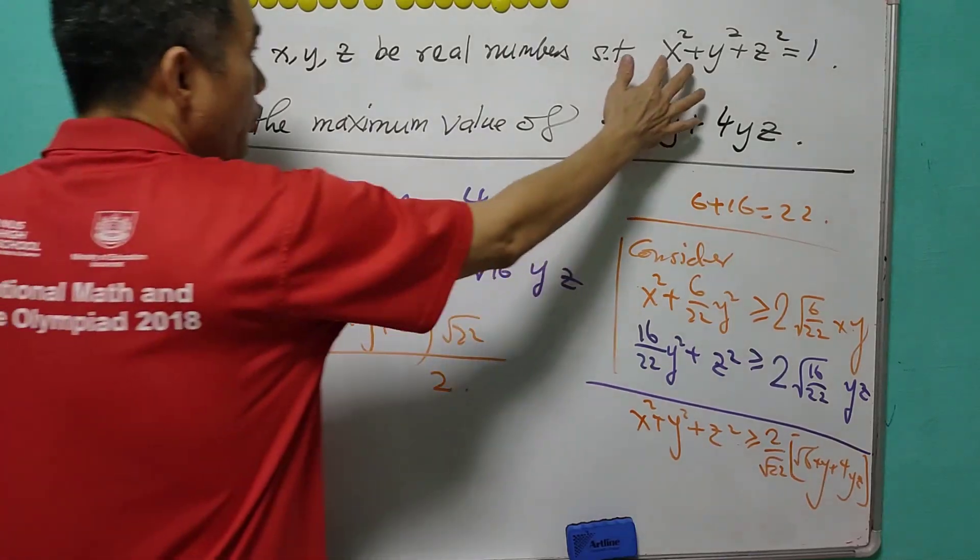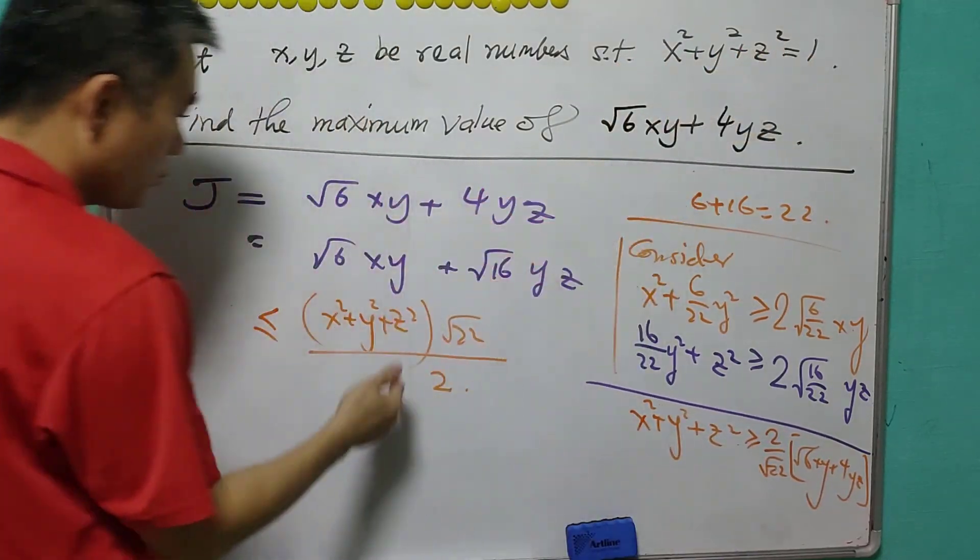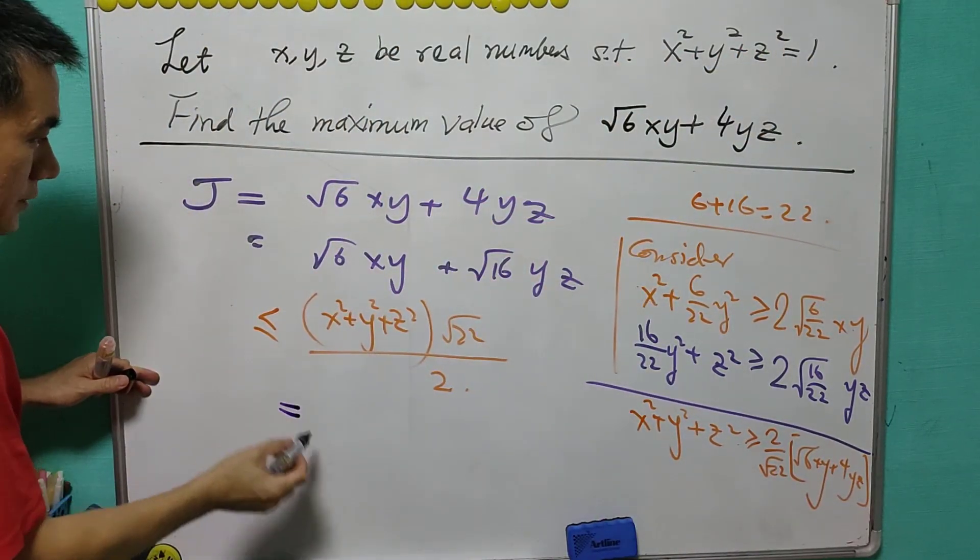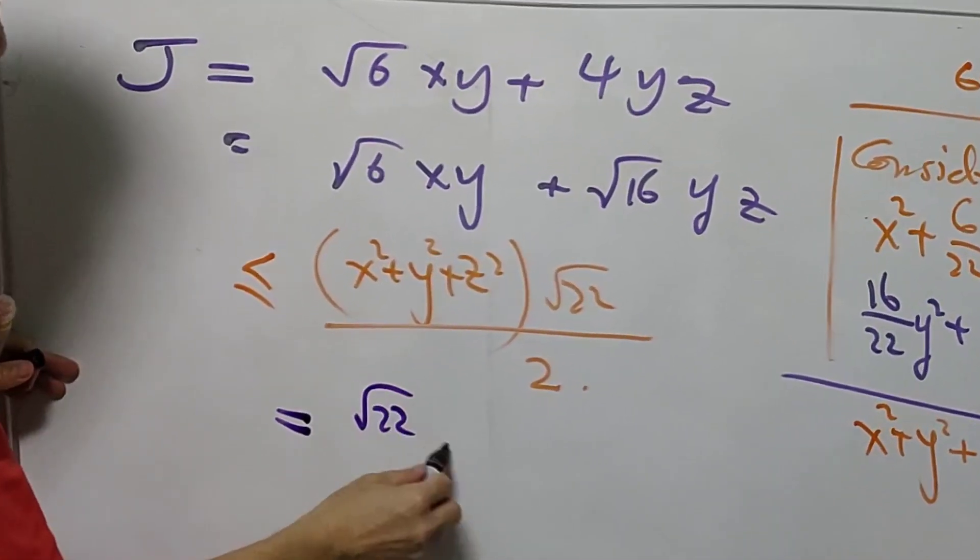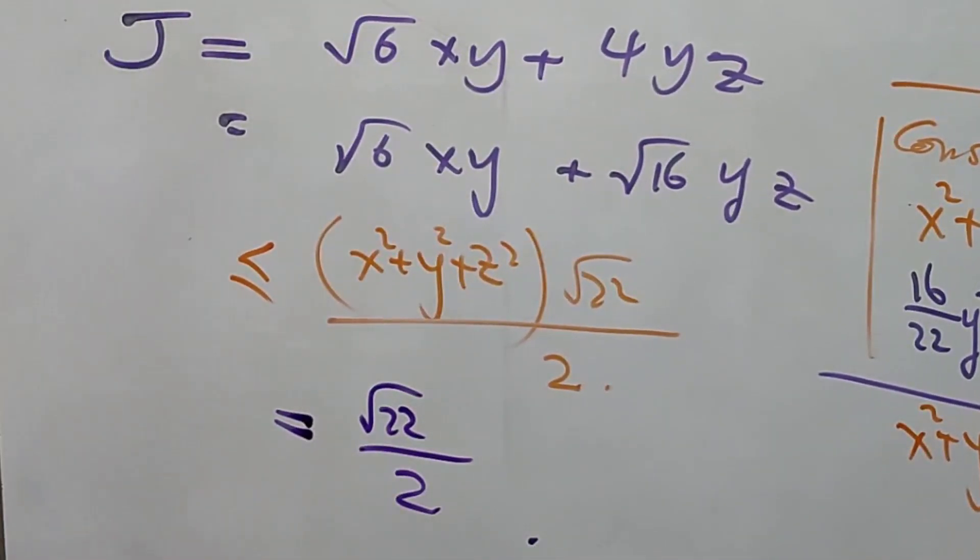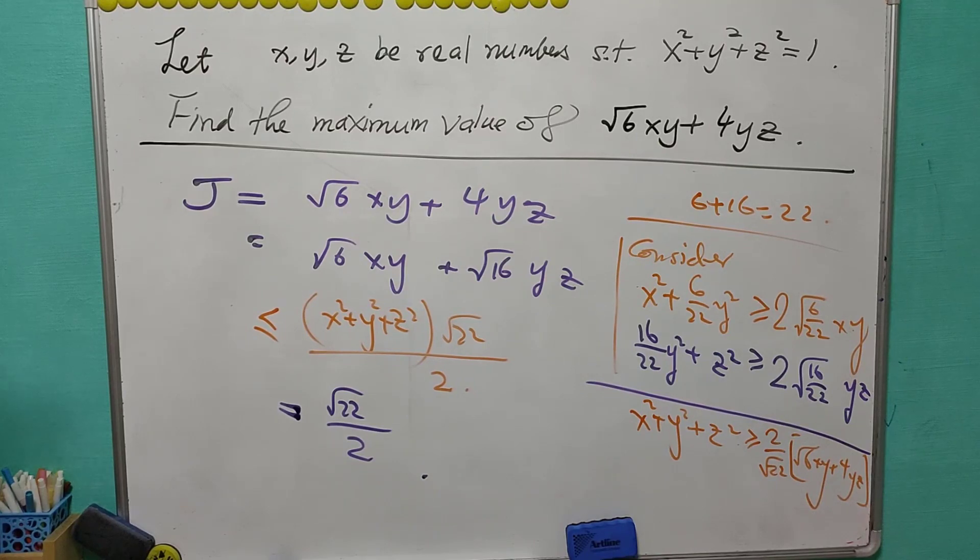And given that x² + y² + z² equals 1, so this is just equal to √22/2. And as usual, we want to ask whether the equality holds.